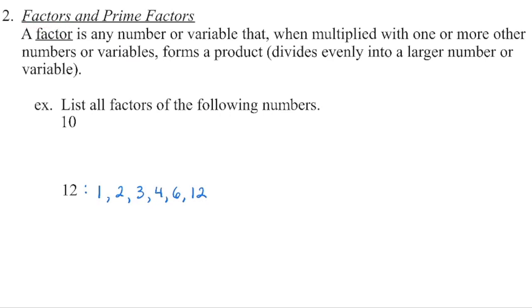Going back to our rocks, when we had 12 rocks, 1 and 12 are factors of 12, as are 2 and 6, as are 3 and 4. Think about how many columns, how many rows — a factor is a number that will divide evenly into this value. A factor can also be a variable; it can also be a negative. So negative 1 times negative 12 are also factors of 12. Multiplied together, they form the product of 12.